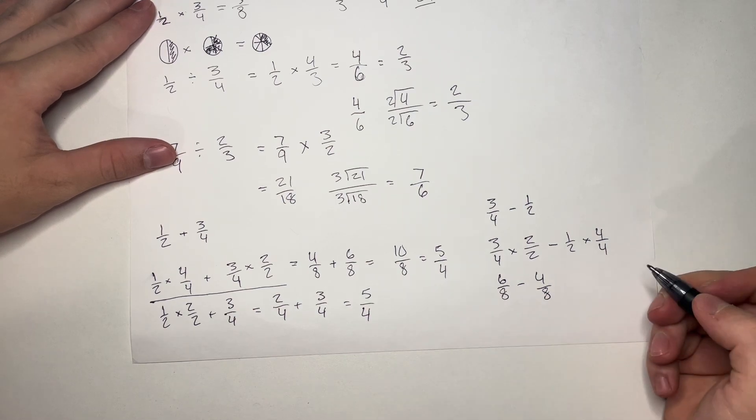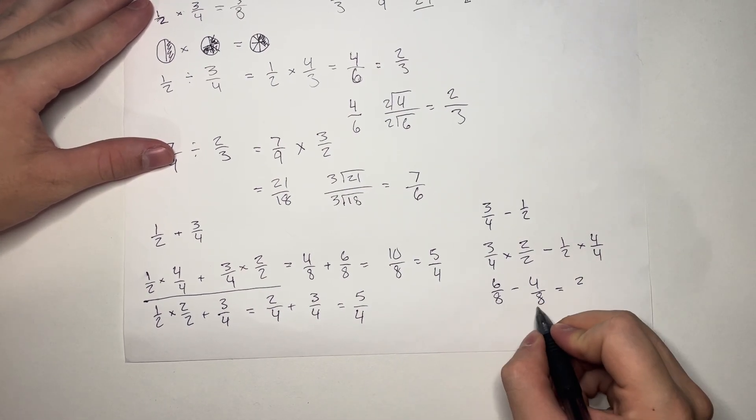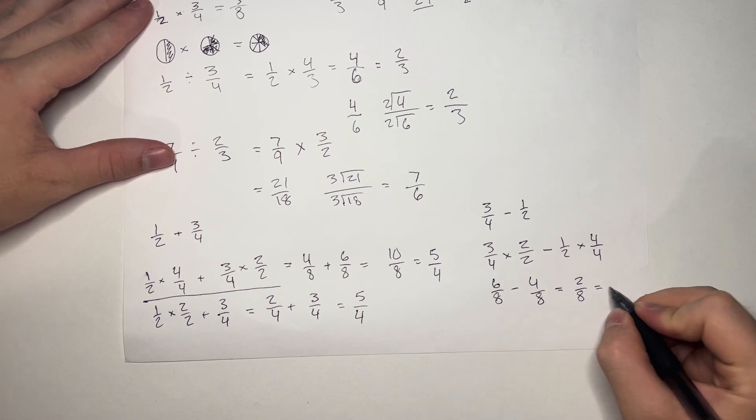And then, we do 6 minus 4, which is equal to 2. And we keep the denominator the same. And here, we can simplify.